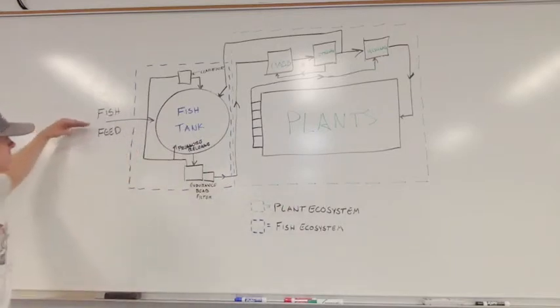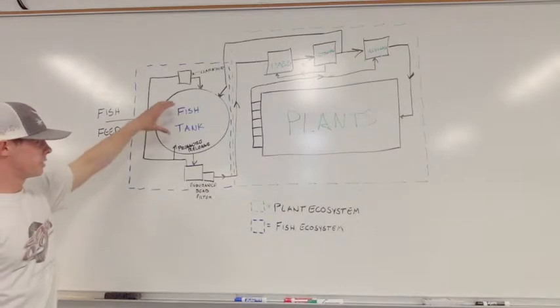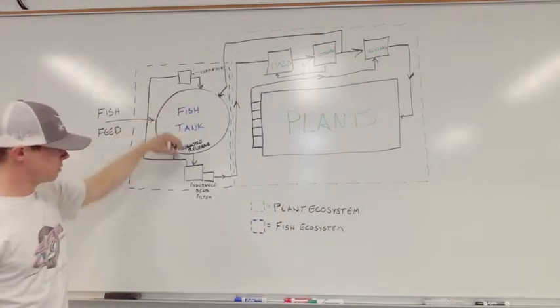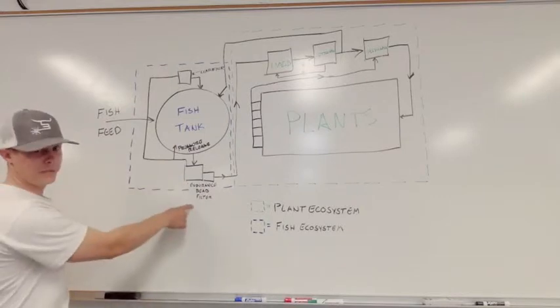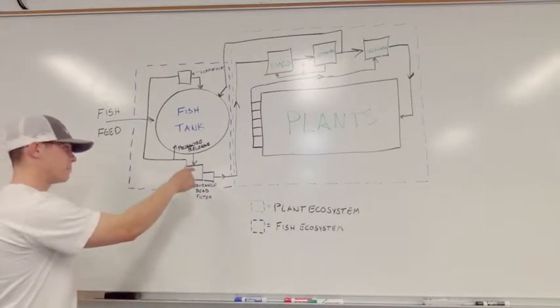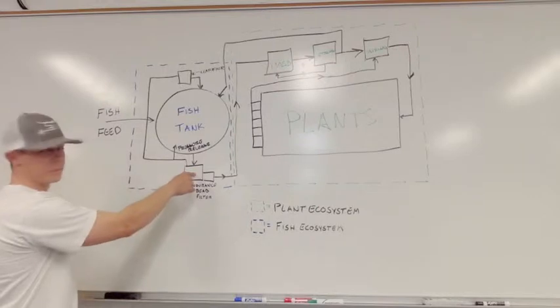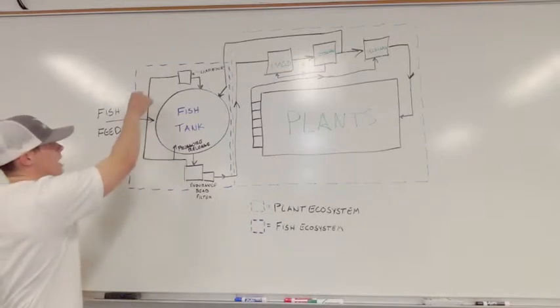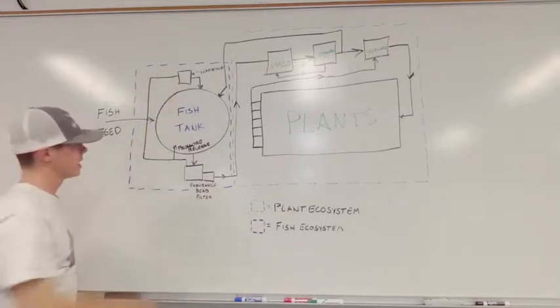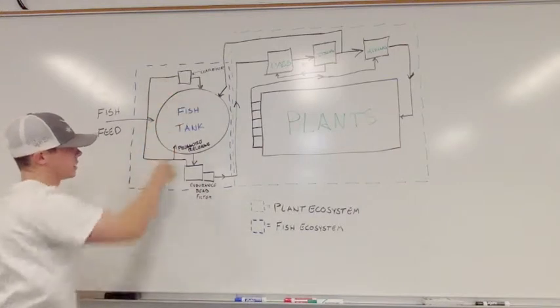We start by putting fish feed into the fish tank. The fish produce waste which goes into the endurance B filter. This filter takes out ammonium from the fish waste and converts it to nitrate. The nitrate is circulated back into a clarifier and back into the fish tank in constant circulation.